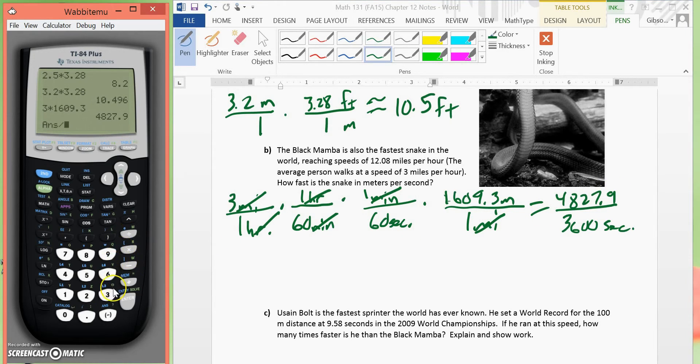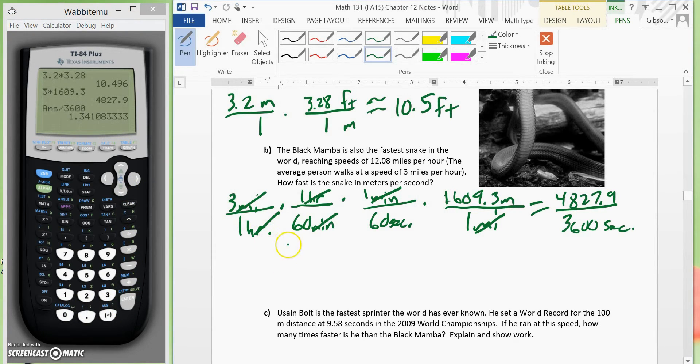And we would divide that by 3,600. And that would give us 1.3. We will round to 1 decimal place. It would give us 1.3 meters per second. And that is our final answer.